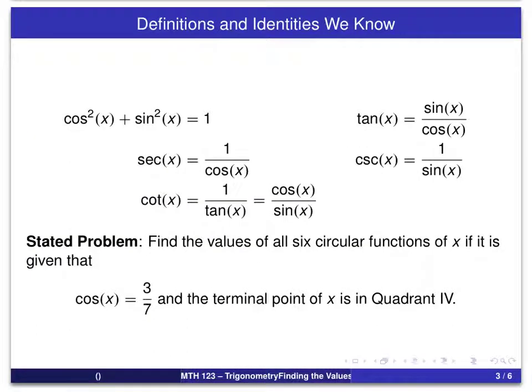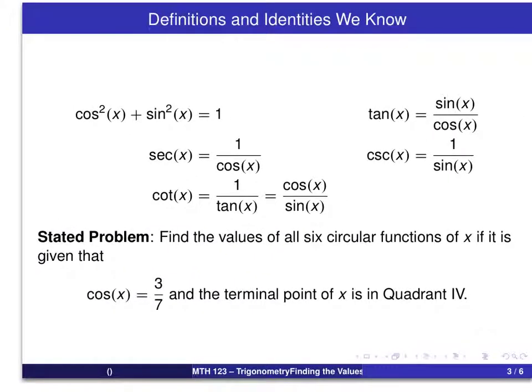So here are the tools that we have for this. One of which, again, once we know that if we know the value of sine or cosine, we can at least get the value of the squared of the other one of those two. And particularly what we use is the Pythagorean identity. With that we will be able to determine a value now of sine squared and since we know x is in quadrant four, the sine will be negative. And once we have both the sine and the cosine, then we can use these definitions to determine the values of the other four circular functions.